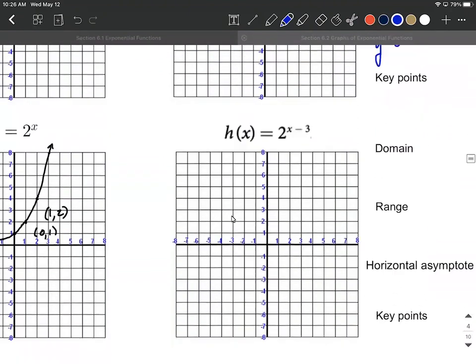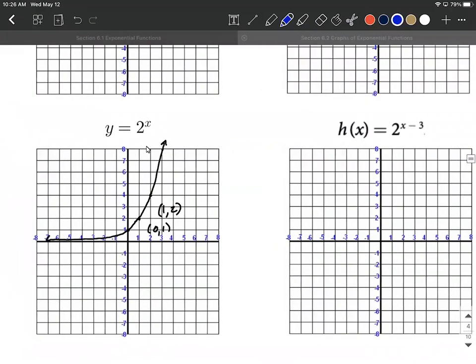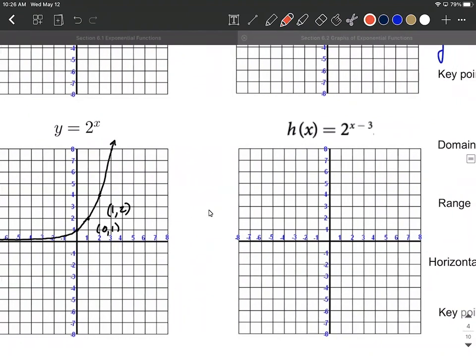All right, let's try another one. Again, we're starting with 2 to the x and its key points. Hopefully we're comfortable with where those come from. But this time, we have 2 to the x minus 3. So this time, another number attached directly to x up in the exponent with the x. So that's going to be a horizontal shift, but again, it kind of moves to the opposite direction we think. It's counterintuitive. So this one's actually going to move everything to the right three units.